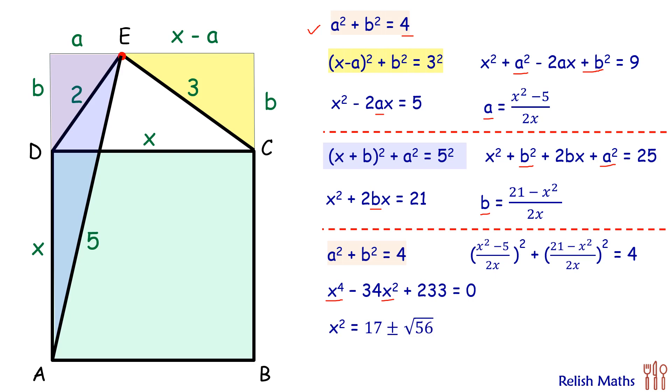Simplifying it, we'll get x² as 9.5 or 24.5. Now only one of these is a valid answer.